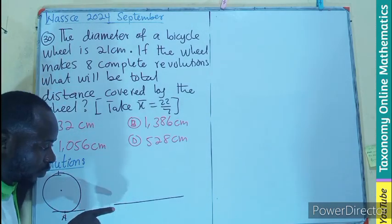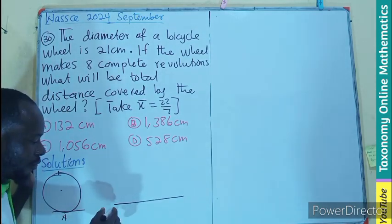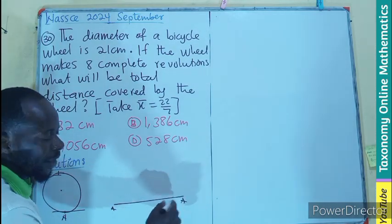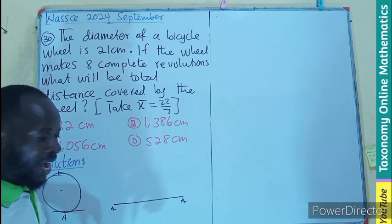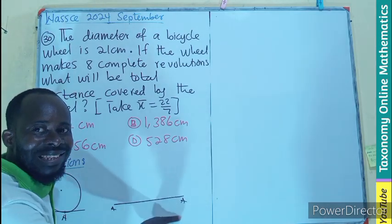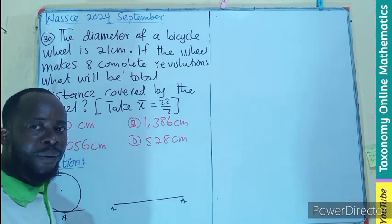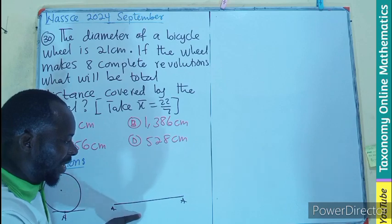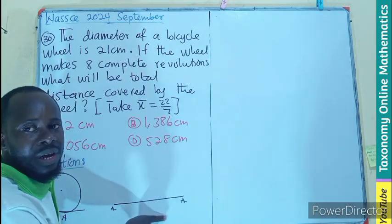And that complete revolution will give you the distance like this, from A to A. And what do you think it will be? That is the distance traveled by the wheel. So this is one complete revolution.